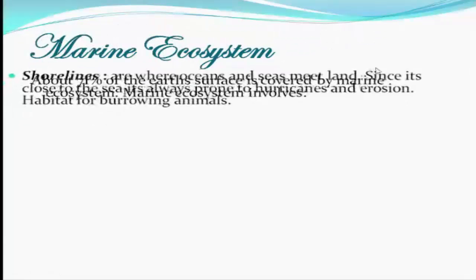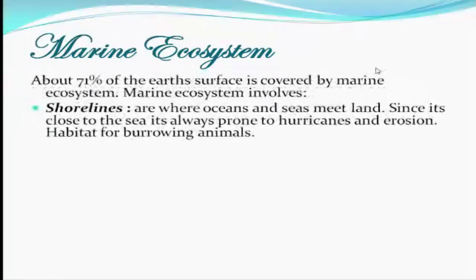We have first, the Marine Ecosystem. Marine Ecosystem covers about 71% of the Earth's surface. It involves shorelines, which are where oceans and seas meet land, and since it's close to the sea, it's always prone to hurricanes and erosion. Shorelines are also habitat for burrowing animals.